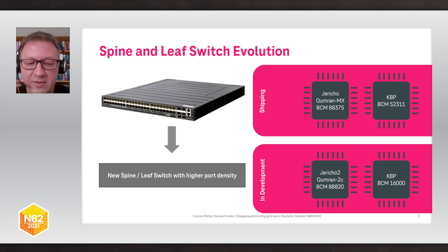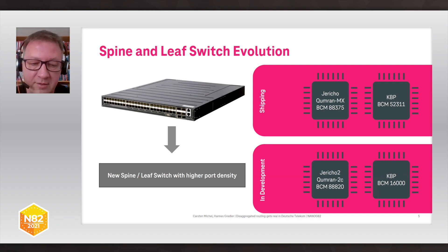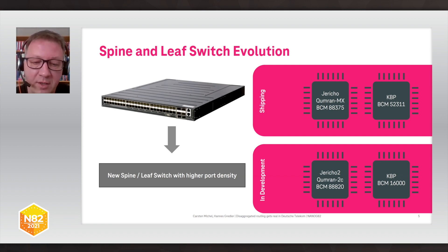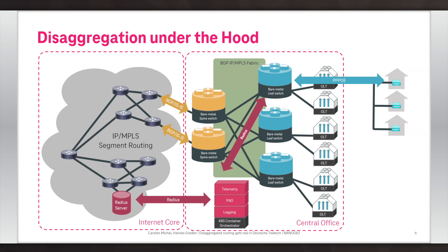Currently we are looking into the next generation of switches with higher port density. We are actively working with some OEM vendors on the design of these switches, which will be based on Broadcom QumranMX2 silicon. The increased performance of this ASIC allows us to implement the routing stack including all the services we've planned so far without any KBP, at least not on the spine switches. For the leaf switches, we are still investigating if the next generation KBP is necessary or not. We do not want hardware specifically built for Deutsche Telekom only — we are looking for commodity hardware to split the development costs across a larger group of interested carriers.